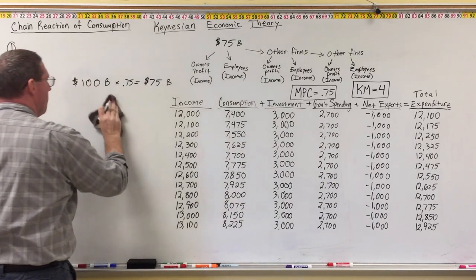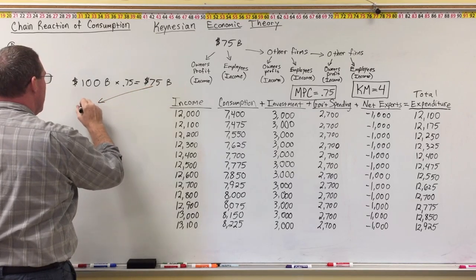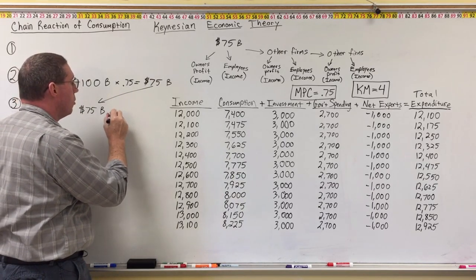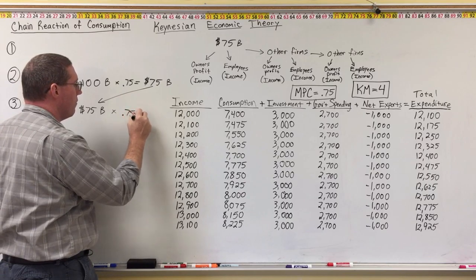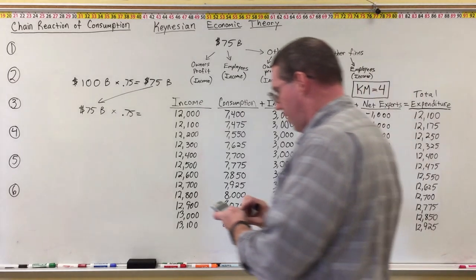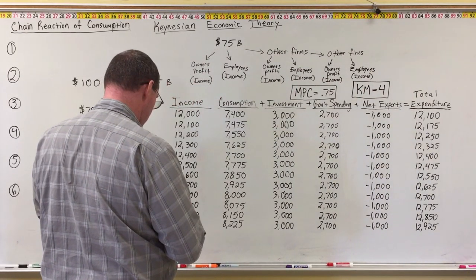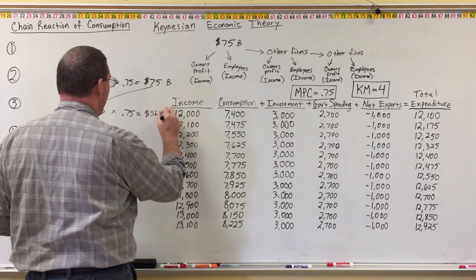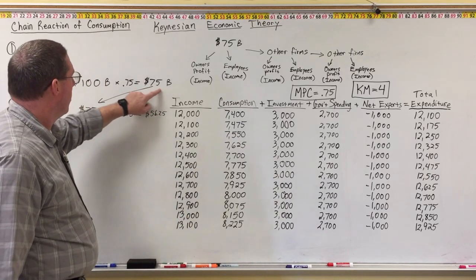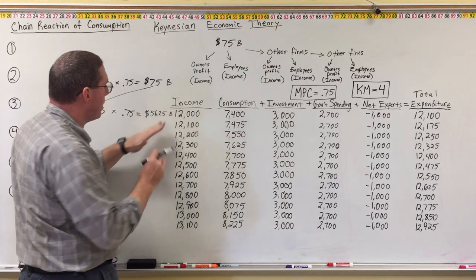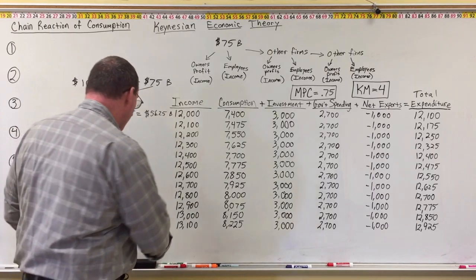This $75 billion is going to become $75 billion in income, which is now going to be multiplied by the marginal propensity to consume of 0.75. If I take $75 billion times 0.75, I get $56.25 billion. So now we're going to have another $56.25 billion in consumption spending.